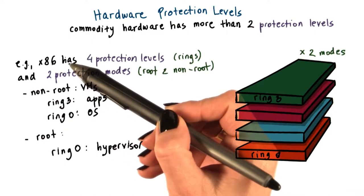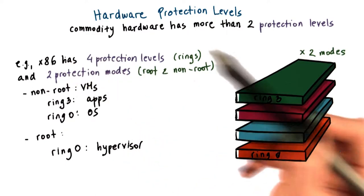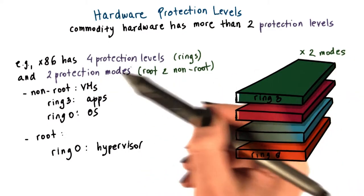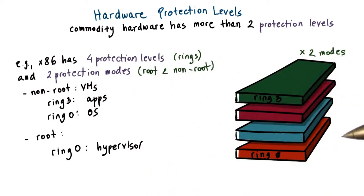More recent x86 architectures also introduce two different protection modes called root and non-root. Within each of these modes, the four protection levels exist. So there are like two times these protection rings.